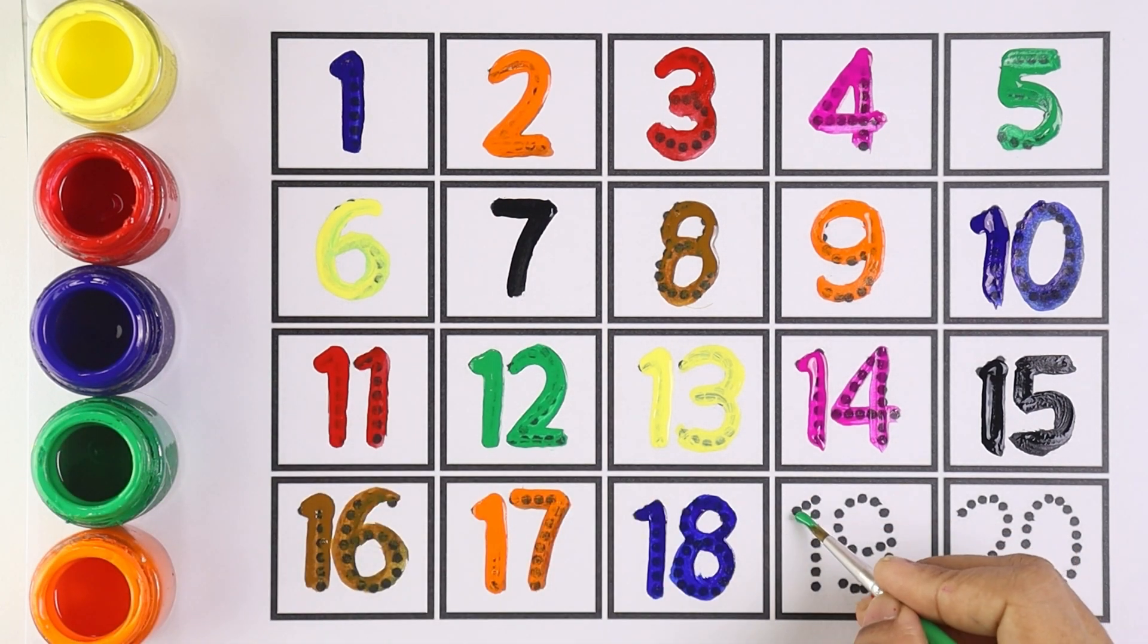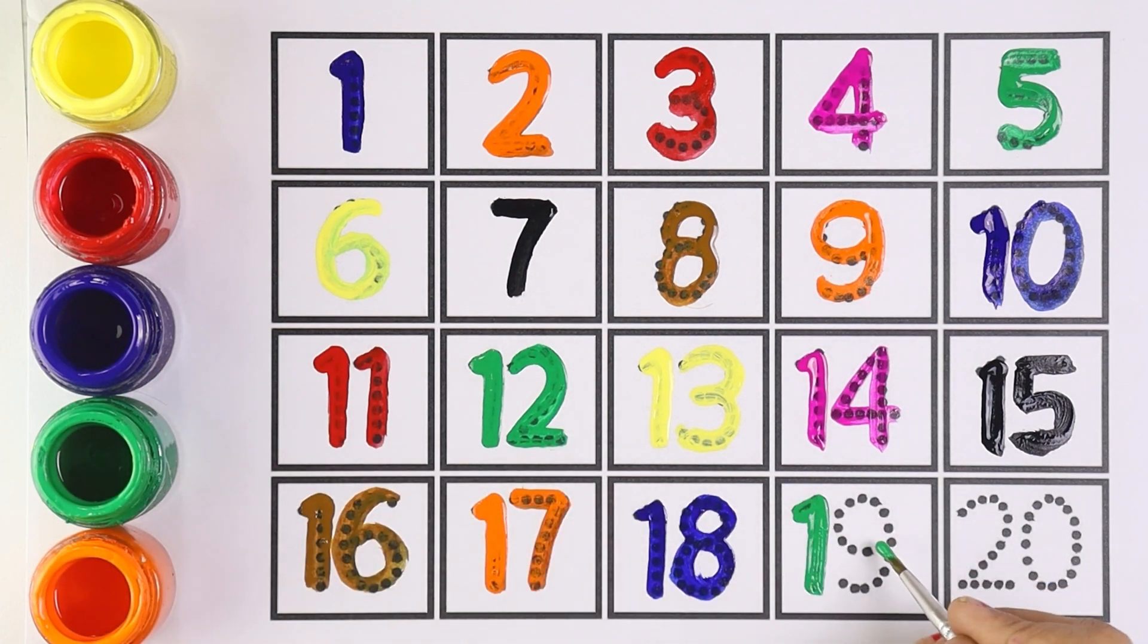Green color for number nineteen. One and nine makes the number nineteen. Number nineteen.